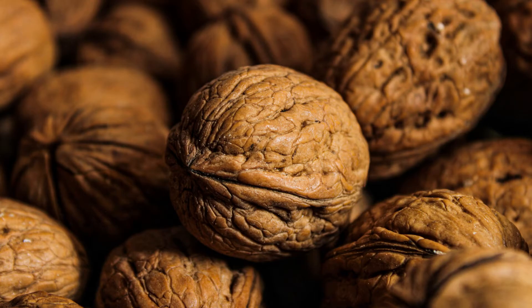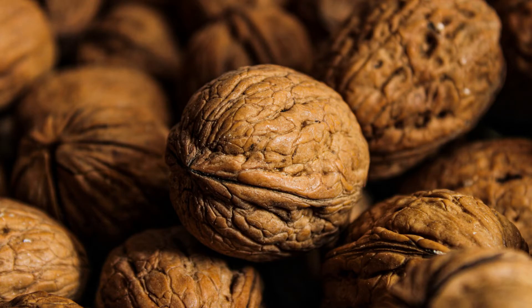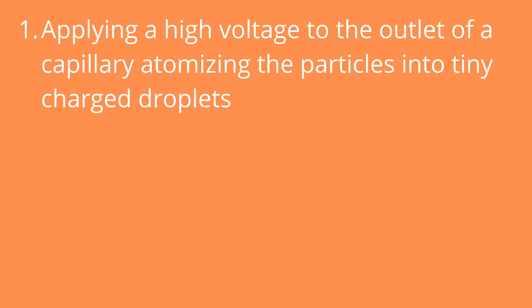In a nutshell, electrospray ionization works by applying a high voltage to the outlet of a capillary, atomizing the particles into tiny charged droplets as they exit it.